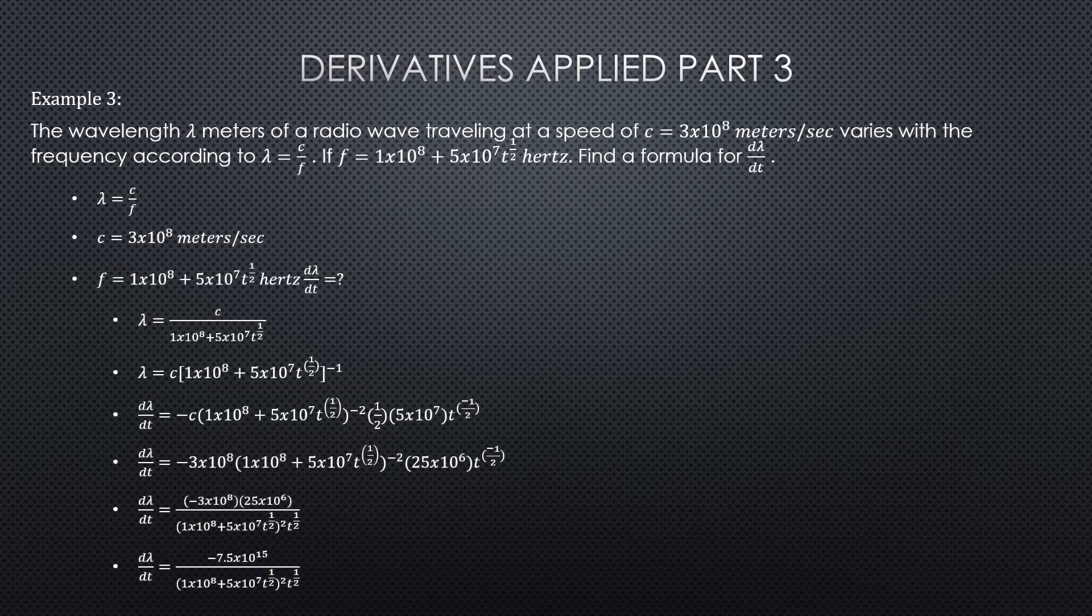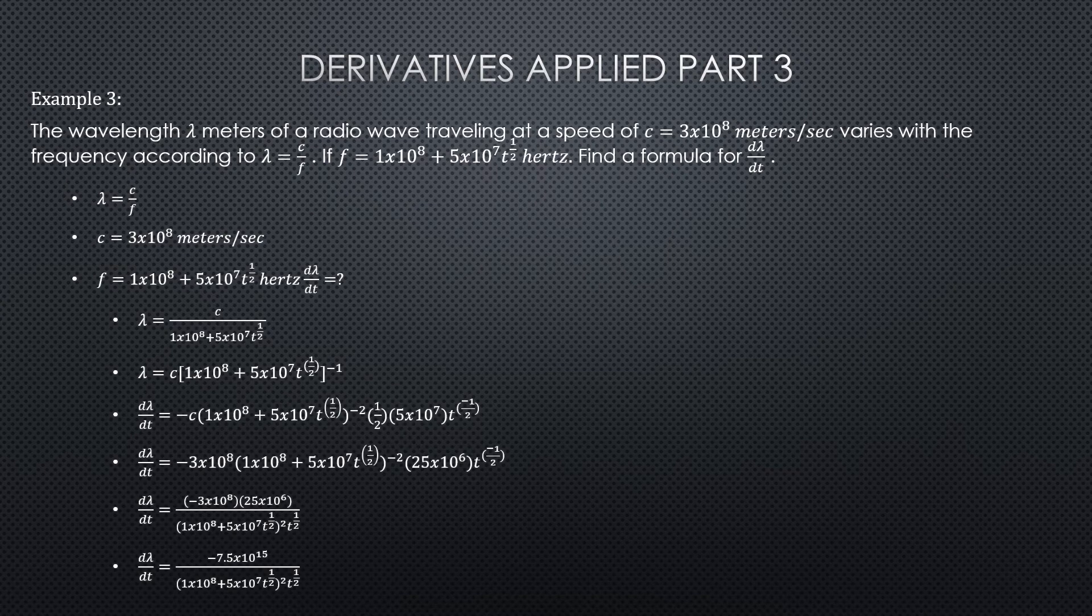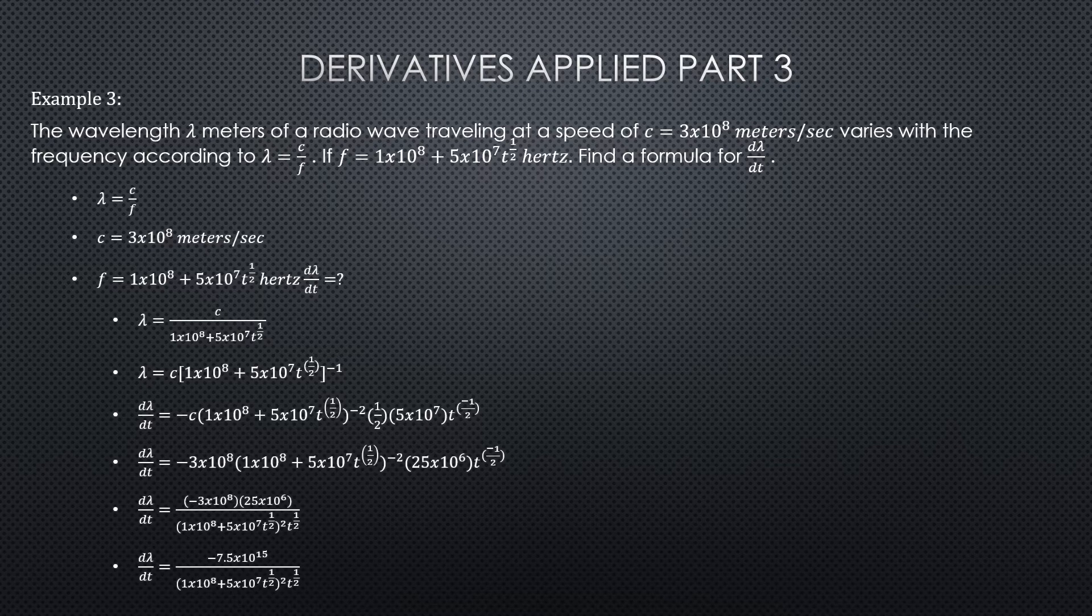The wavelength in meters of a radio wave traveling at the speed of light, 3 times 10⁸ meters per second, varies with the frequency according to wavelength lambda equals the speed of light divided by frequency.